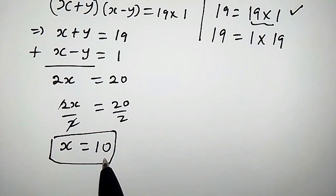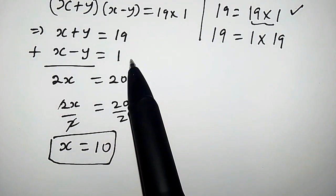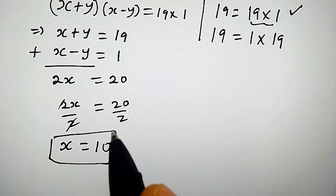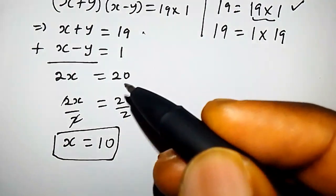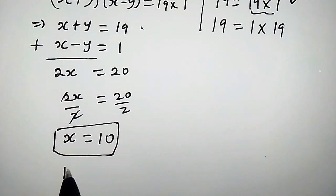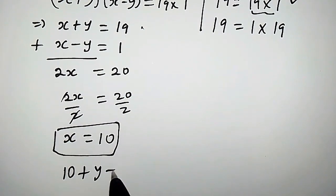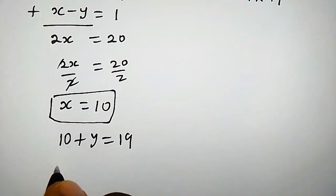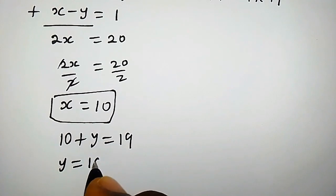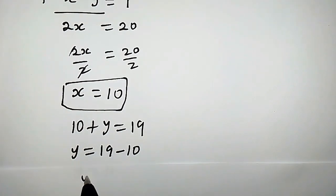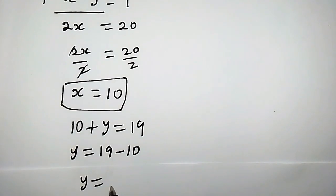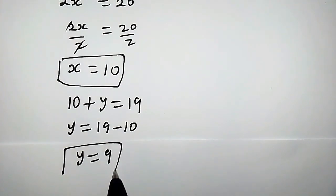To obtain the value of y, we substitute the value of x into the first equation. So we have 10 plus y equals 19, which means y equals 19 minus 10, that is 9. So the value of y is 9.